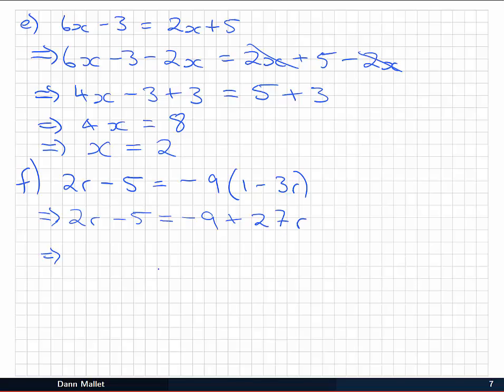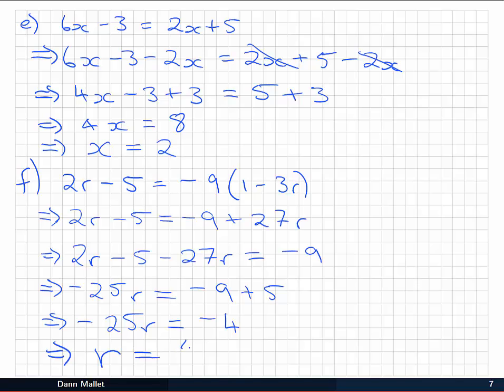I'm going to subtract 27r from both sides, which would leave me with minus 9 on the right hand side. 2r minus 27r is minus 25r. And I've got a minus 5 I want to get rid of, so I'll add 5 to both sides, leaving me with minus 9 plus 5. And finally, to get our r by itself, I'm going to divide both sides by minus 25. So r is minus 4 divided by minus 25.